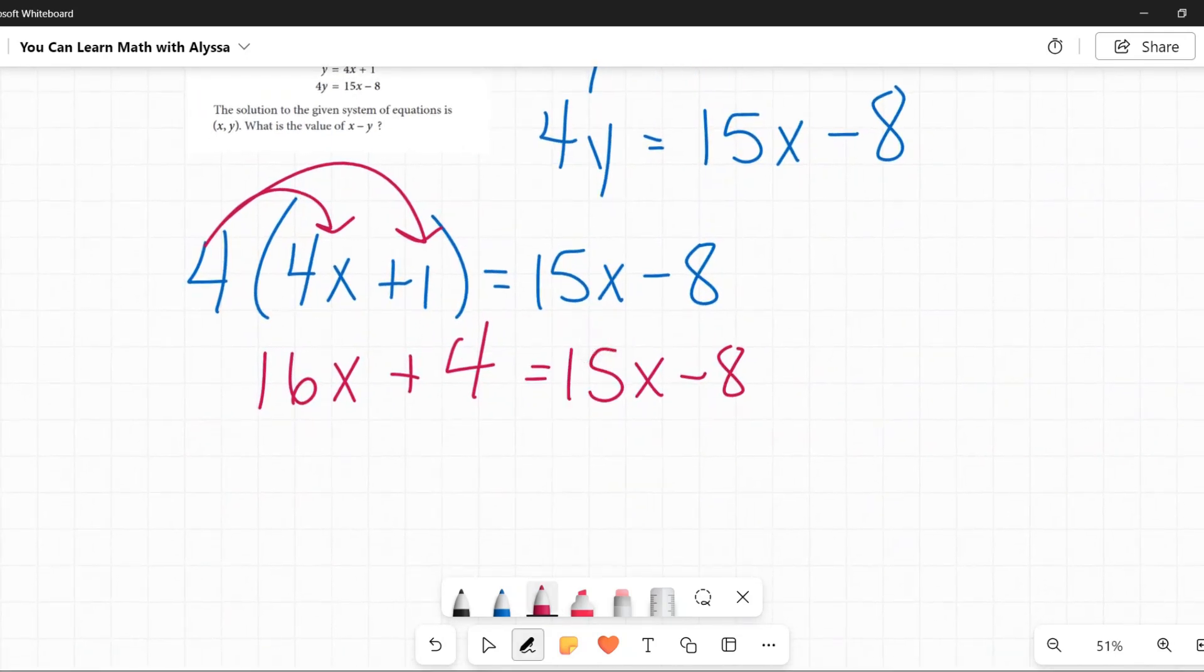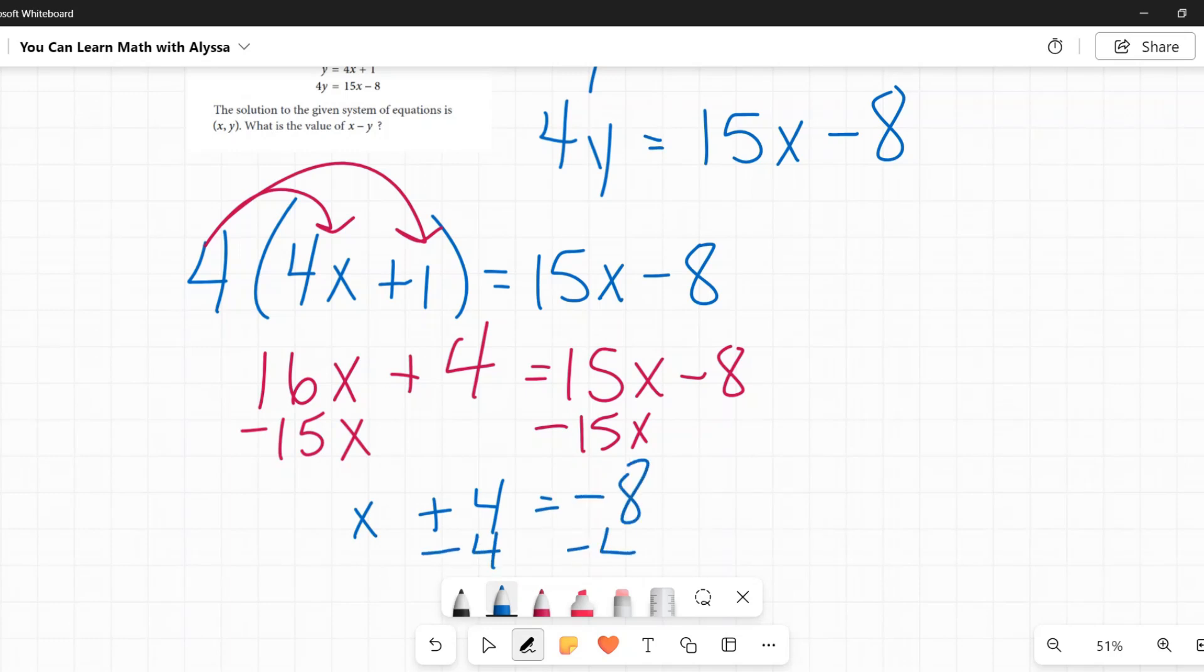And then I'm going to move this x over here by subtracting 15x from both sides. So I just have x plus 4 equals, and there's negative 8 on the right. Then to get rid of that plus 4, I'm going to subtract 4 from both sides, leaving me with x on the left and negative 8 plus negative 4 is negative 12.